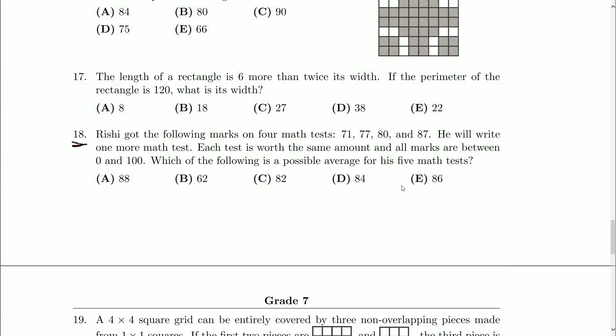Rishi got the following marks on four math tests: 71, 77, 80, and 87. He will write one more math test. Each test is worth the same amount, and all marks are between 0 and 100. Which of the following is a possible average for his five math tests?